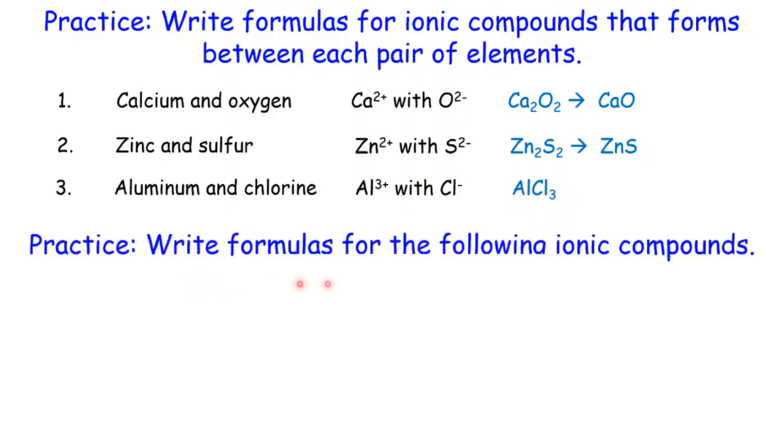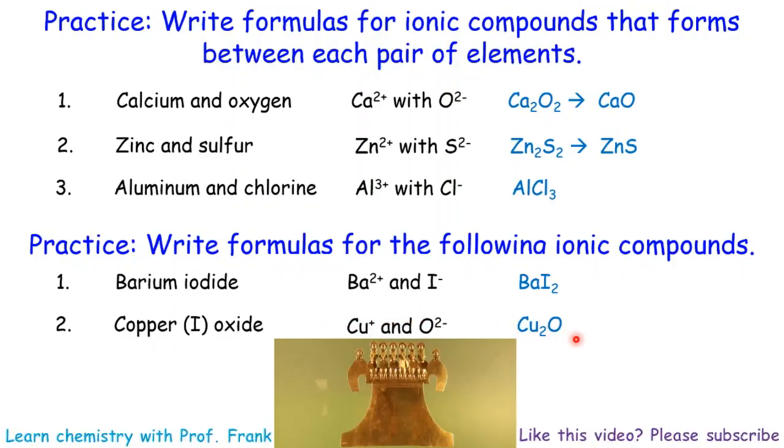Now write the formula for the following ionic compounds. We have names for the ionic compounds. Barium iodide, barium, Ba2+, group 2A metal, iodide, that should be I-, and then BaI2. Copper 1 oxide. Copper 1 has to be Cu+. Oxide of course is 2 negative. Again, write down the formula. Use the charge as the subscript for the other ion.